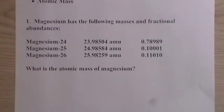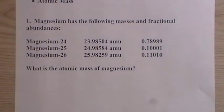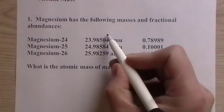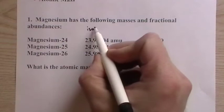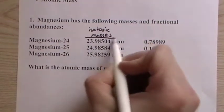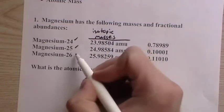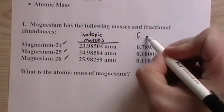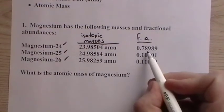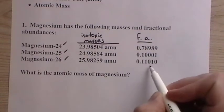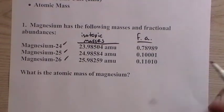What we're trying to find is the atomic mass, or the average mass, of magnesium from the isotopic masses here, the masses of each of the individual isotopes. There's magnesium-24, 25, 26, and then the fractional abundances. We'll just write FA here. So this is 78.989%, 10.001%, and 11.010%.